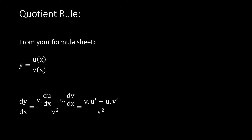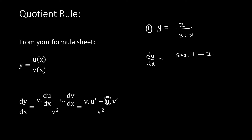Let's do a quick example. Say I have y equals x over sin x. The one at the top is always u, the one at the bottom is v. So the answer is: v, which is sin x, times the derivative of u, which is 1, minus u, which is x, times the derivative of v, which is cos x — all over v squared, which is sin²x.